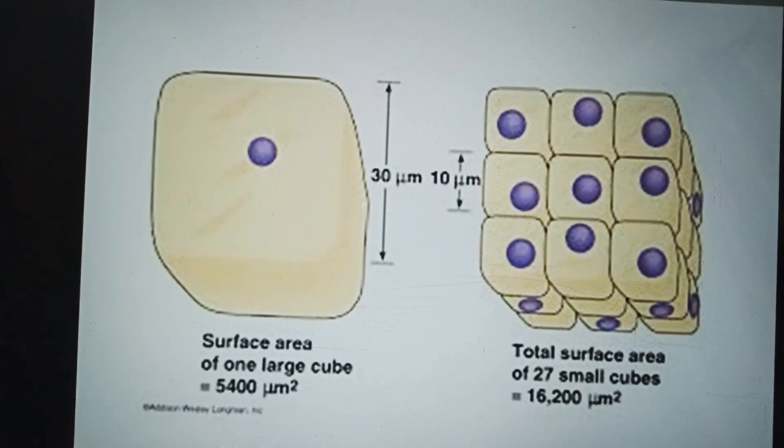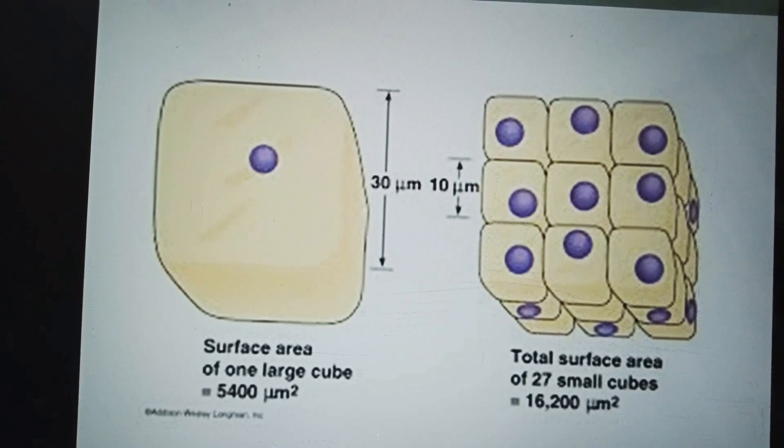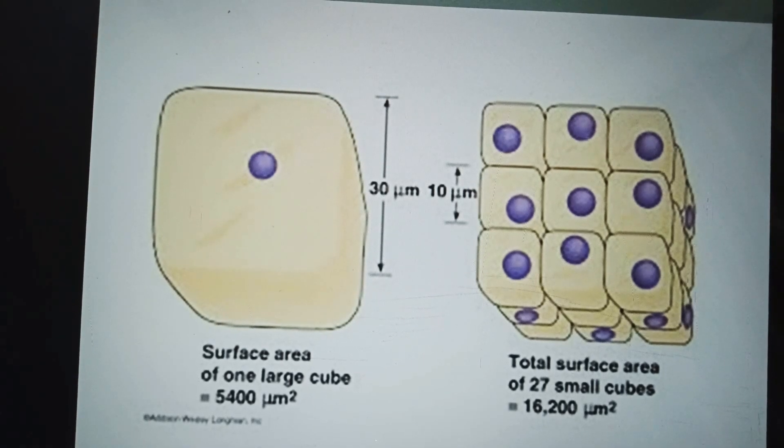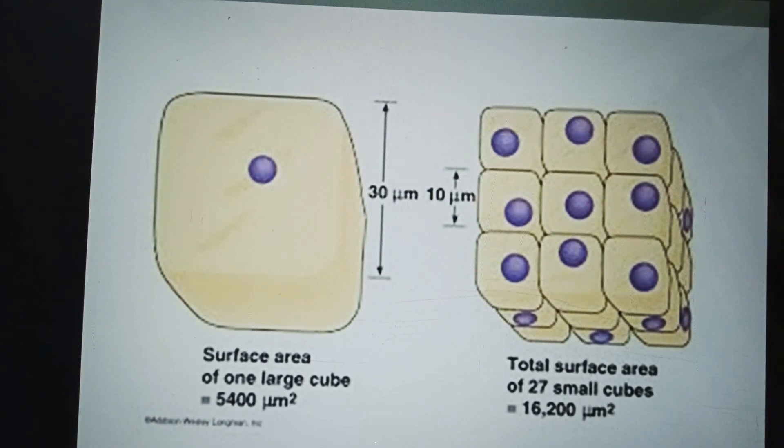Most cells lie between these extremes. Cell size and shape are related to the function. Bird eggs are bulky because they contain a large amount of nutrient for the developing young. Long muscle cells are efficient in pulling different body parts together.